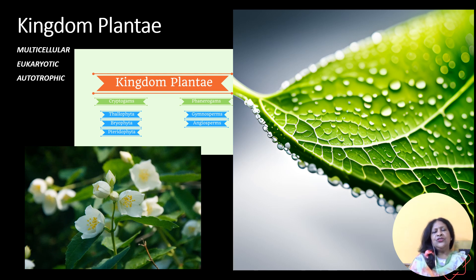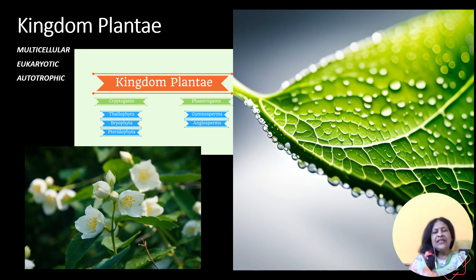These are the gymnosperms and the angiosperms. The gymnosperms are naked seeded plants, while the angiosperms have covered seeds inside the fruits. They are the most developed among the kingdom Plantae with all developed structures from the root to the stem and finally to the leaves. Even the seeds can be either single cotyledonous or called monocotyledonous, or it can be dicotyledonous.